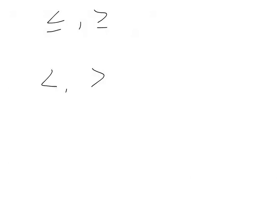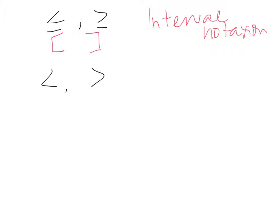There are a couple of things about inequalities we need to go over. If it's less than or equal to or greater than or equal to, you're always writing your answer in what's called interval notation, using parentheses and brackets. If you have an 'or equal to' symbol, you use a bracket. If you just have greater than or less than, you use parentheses. If you have positive or negative infinity, you also use parentheses. The parentheses means up to but not including, and the bracket means including.